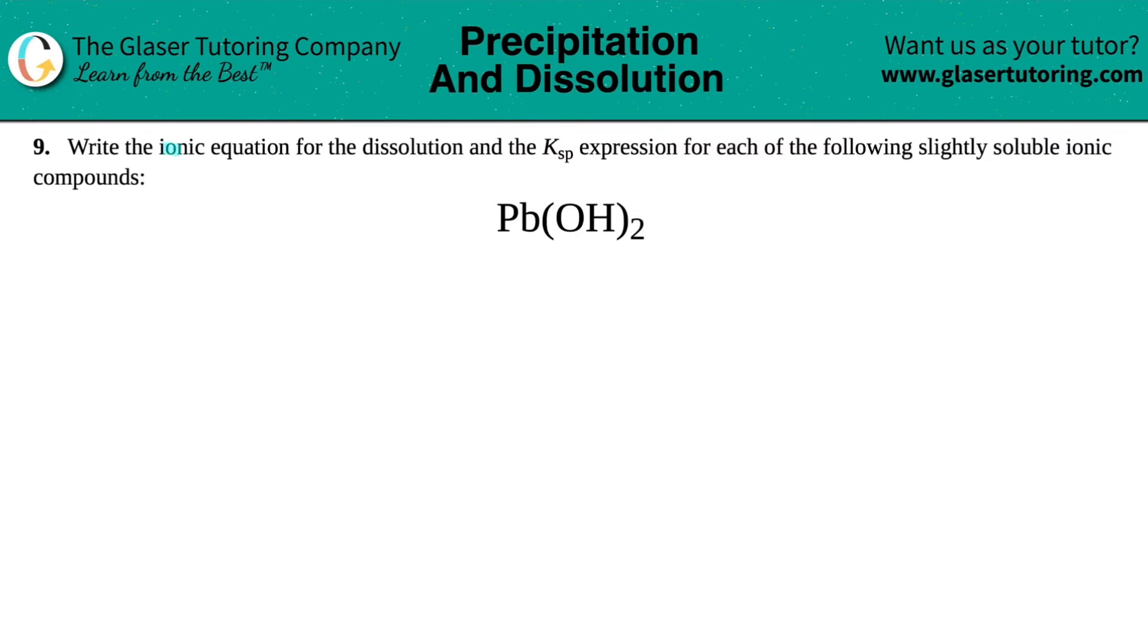Number nine, write the ionic equation for the dissolution and the Ksp expression for each of the following slightly soluble ionic compounds, and then we have lead to hydroxide, Pb(OH)₂.